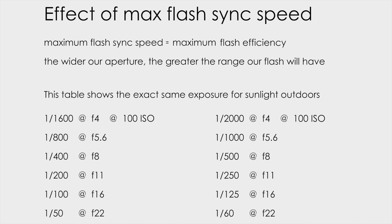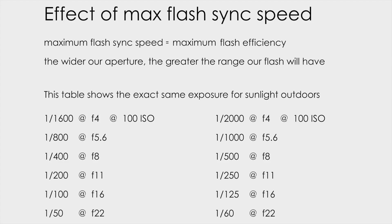Looking at the table: on the left side we have maximum sync speed of 1/200th, on the right side 1/250th. We'll step through the settings. At 1/50th it's f/22, 1/100th it's f/16, 1/200th it's f/11 — all the same ambient exposure. Something important happens at 1/200th or 1/250th — that's our ceiling, maximum sync speed. Even though shutter speed doesn't affect flash exposure in normal sync mode, I want to step through the shutter speeds to keep continuity of thought. I want you to have your camera and flash in hand and step through the same settings — this is repeatable and consistent.